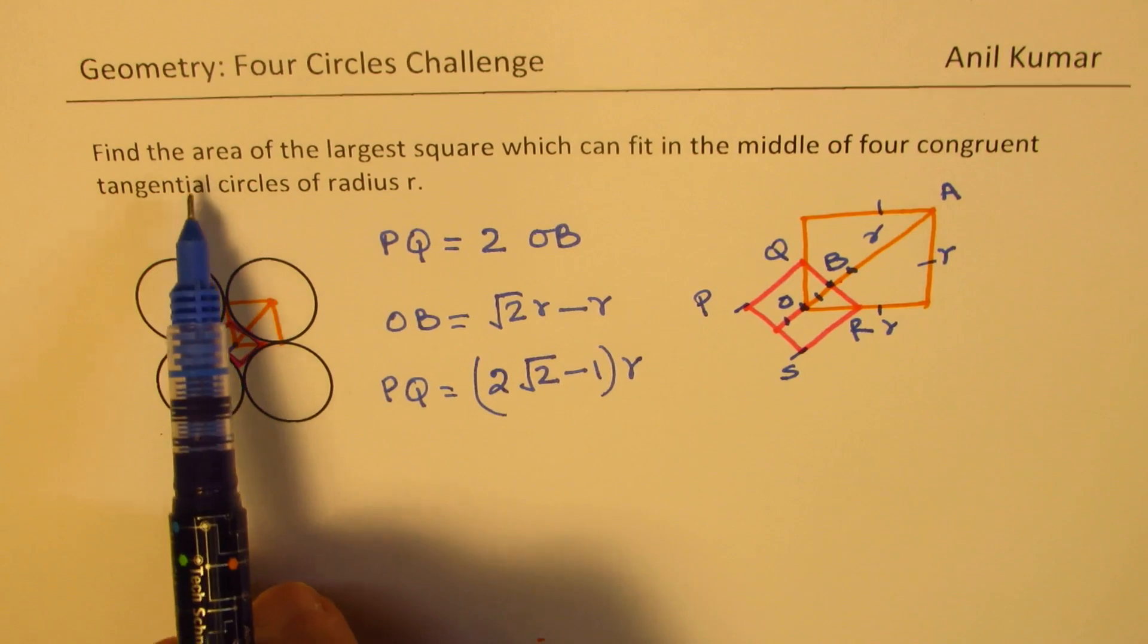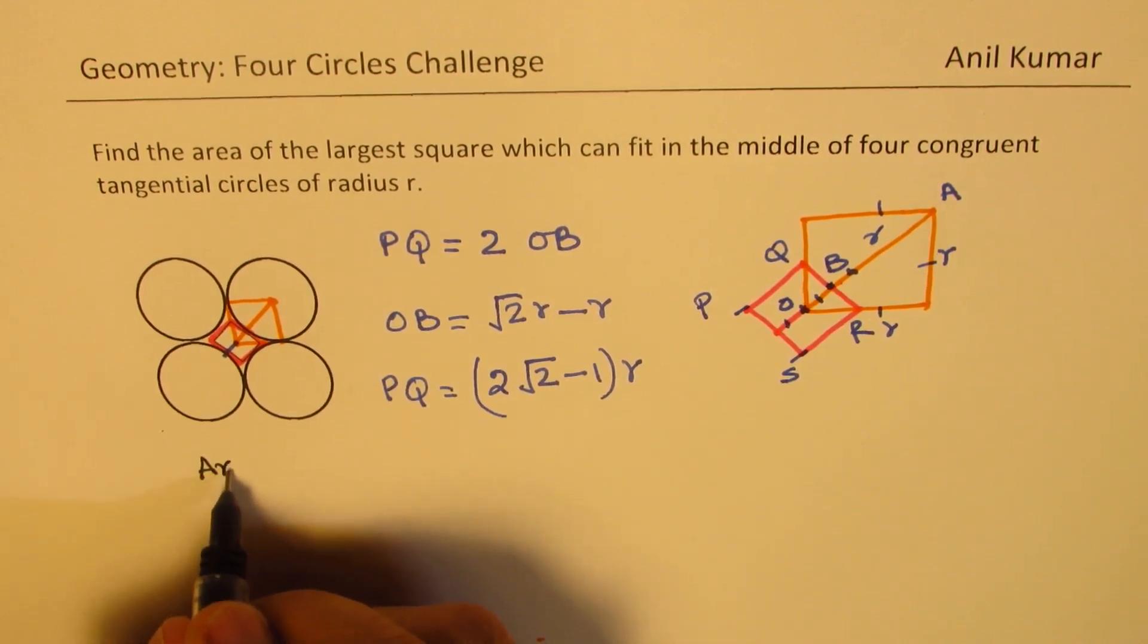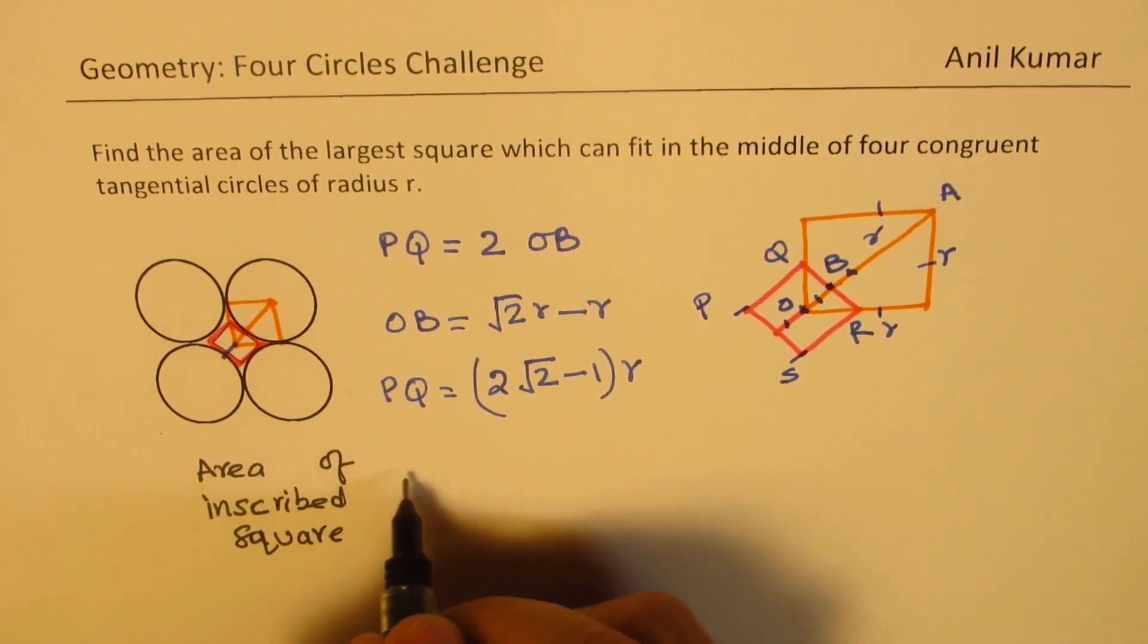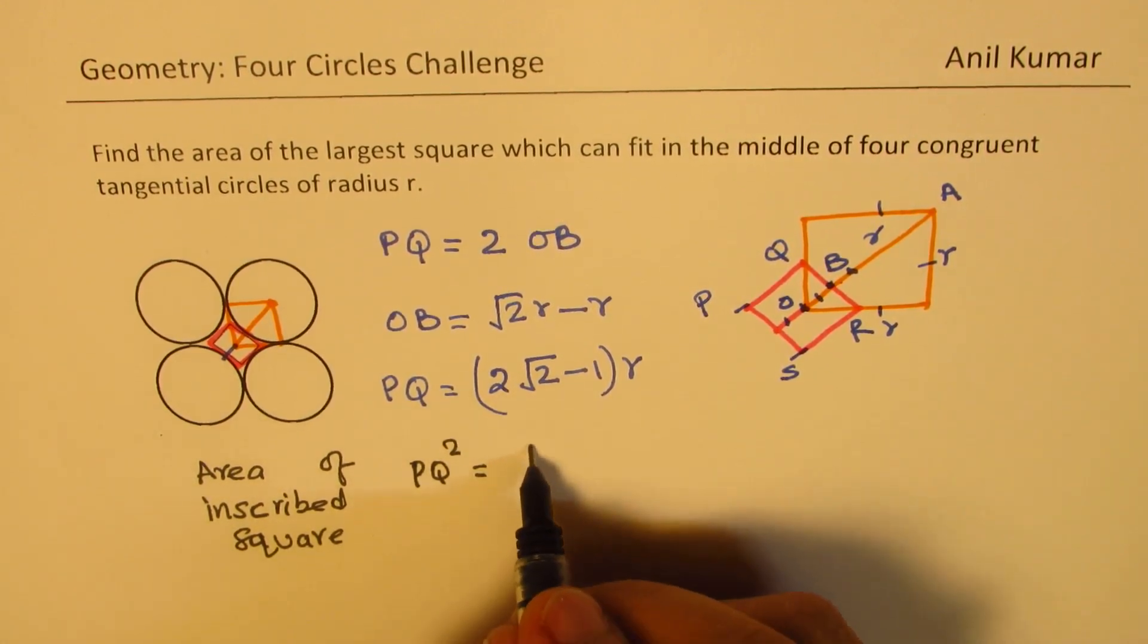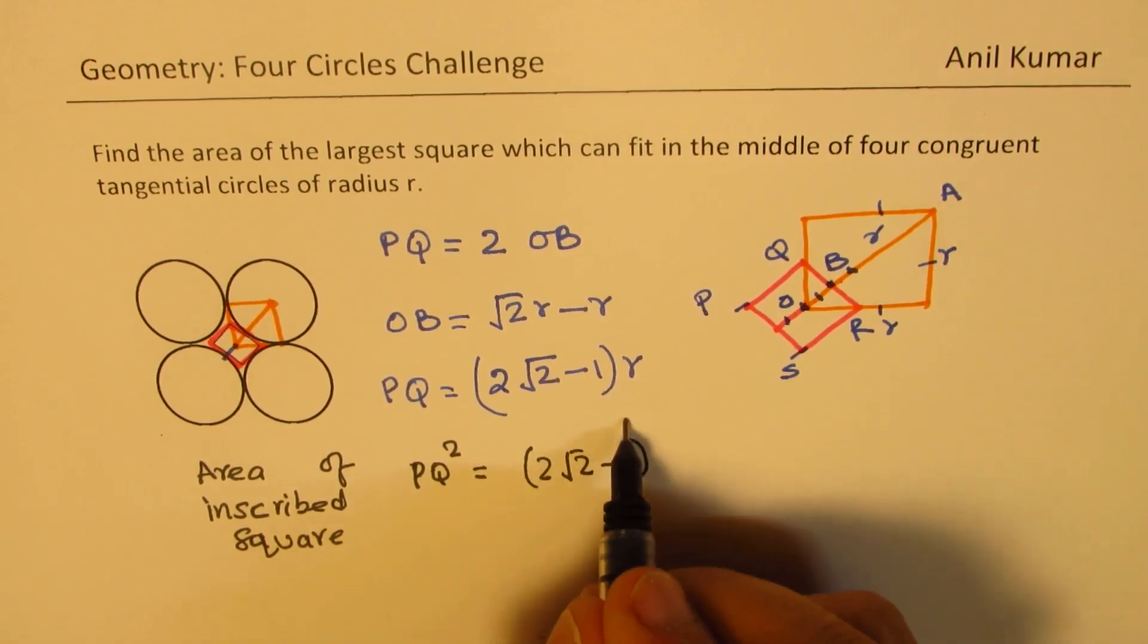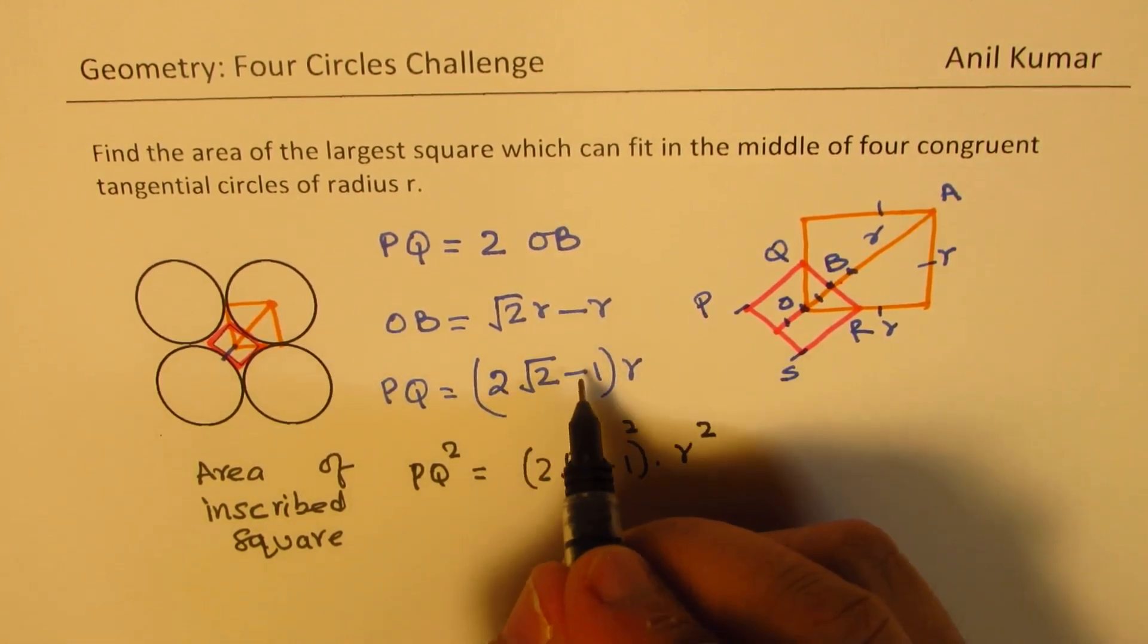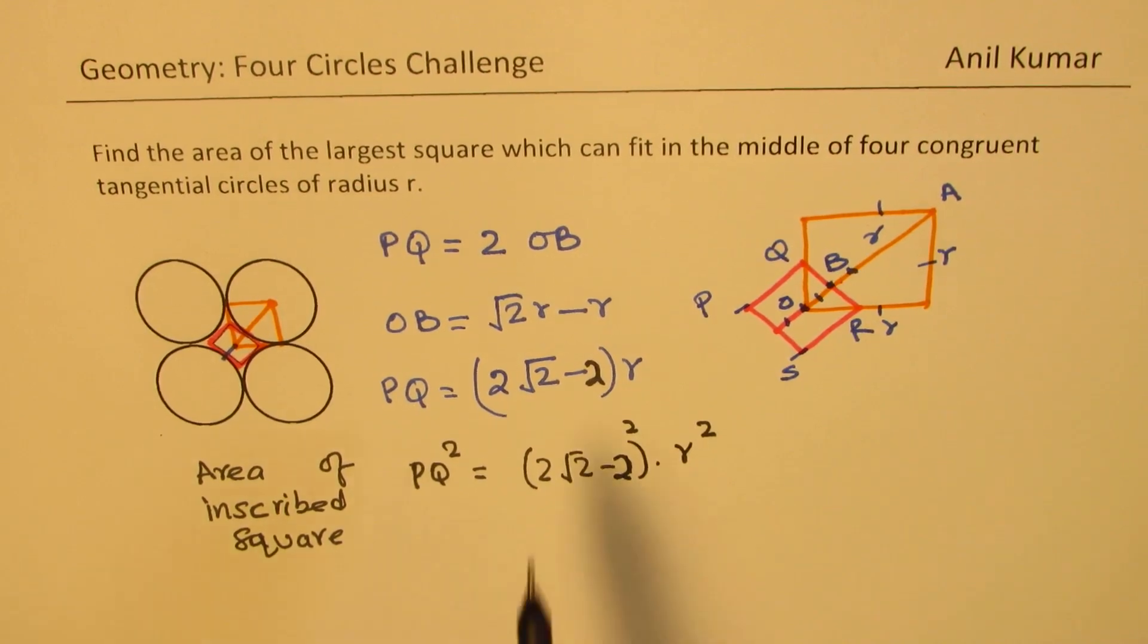And so we need to find what? Area of the largest square. Area of a square is side squared. So area of inscribed square will be how much? It is PQ squared. So we can square this up. So we get 2 square root 2 minus 1 whole squared times r squared. Does it make sense to you? When you multiply by 2, this also gets multiplied by 2. So both get multiplied by 2. That is PQ twice. So that is how you can actually get your result.